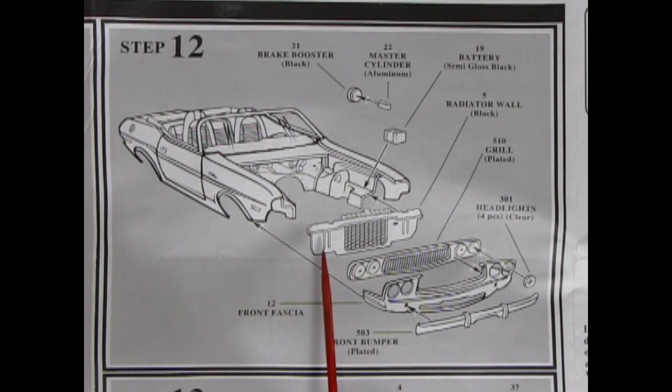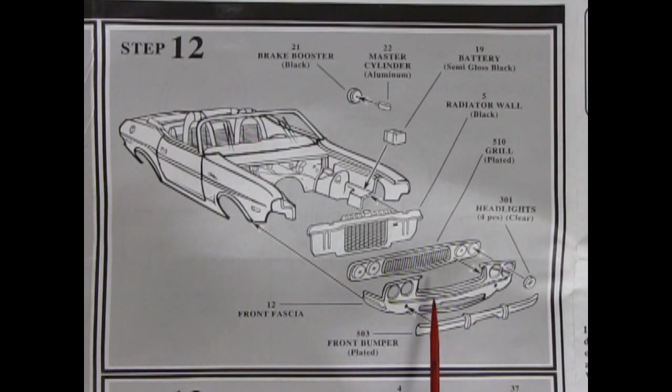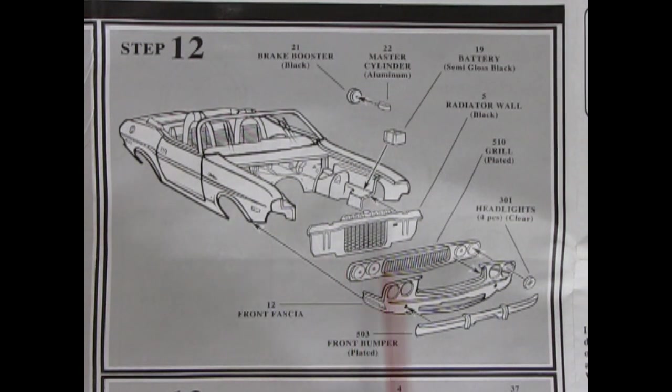And then what they would do is paint flat black on this side of the radiator. Or the radiator support wall. So that you don't see color in through the outside of the car. This would all be blacked out when you look in that way. So it made for a nicer, cleaner front end.